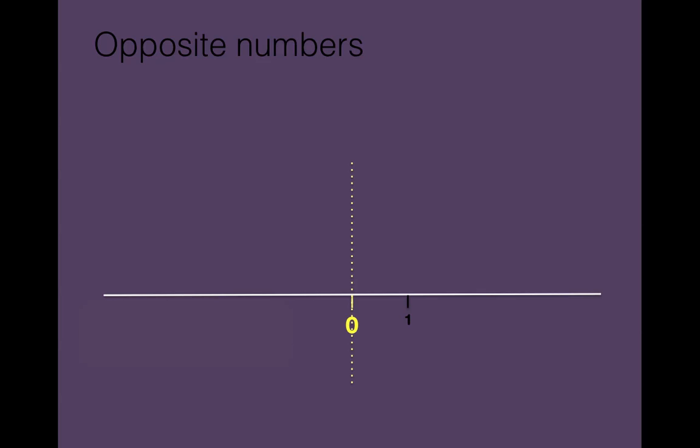Last thing I want to teach you is opposite numbers. So here we have a typical number line and we have 0 as a reference point. To the right of 0 we have positive 1. Now think of the opposite number as its evil twin brother, and the evil twin brother of positive 1 will be negative 1.